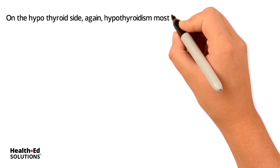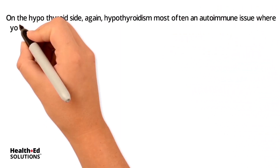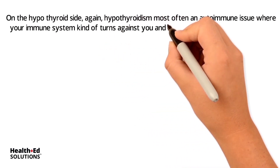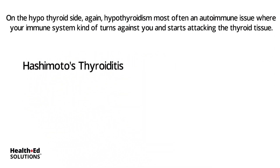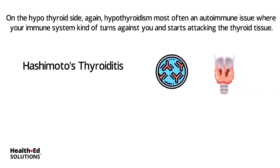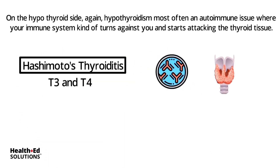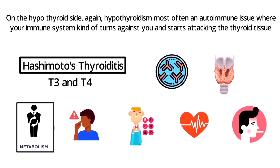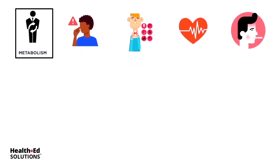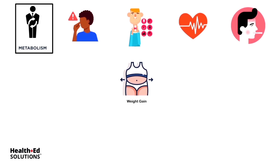On the hypothyroid side, hypothyroidism is most often an autoimmune issue where the immune system starts attacking the thyroid tissue, and this is called Hashimoto's thyroiditis. With Hashimoto's, antibodies are produced against the thyroid gland itself, resulting in underproduction of T3 and T4 and a slower metabolic rate. So you'll have exactly the opposite signs and symptoms: slow heart rate, slow metabolism, lower temperature, lower blood pressure.